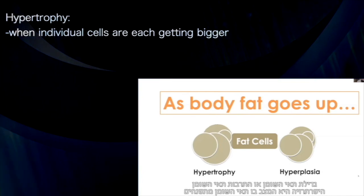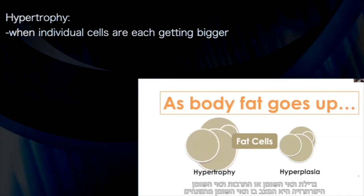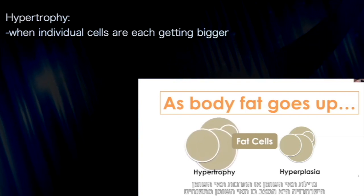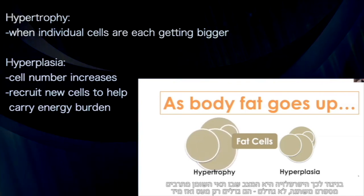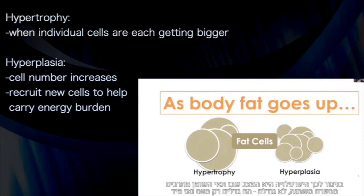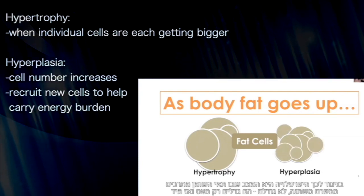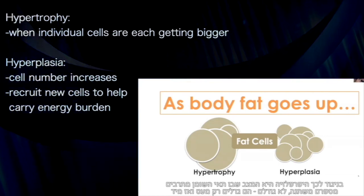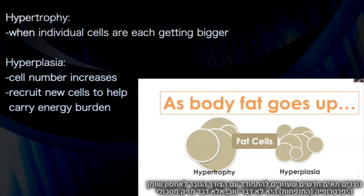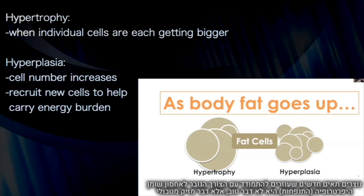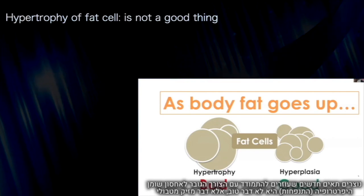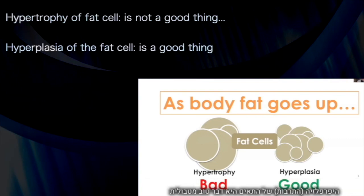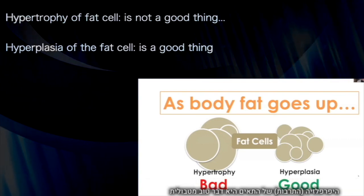Fat tissue expands either through hypertrophy or hyperplasia. In hypertrophy, the individual cells themselves get bigger — no change in cell number. In contrast, with hyperplasia, cell number changes while cell size doesn't change as much. Fat cells that start to get a little big will simply recruit new fat cells to help carry the energetic burden of storing more fat. Hypertrophy of the fat cell is metabolically bad; hyperplasia is metabolically good.